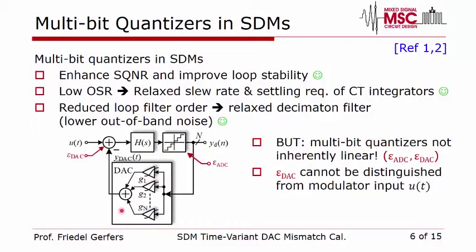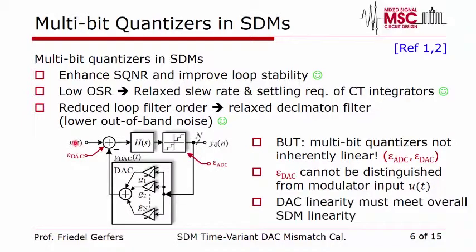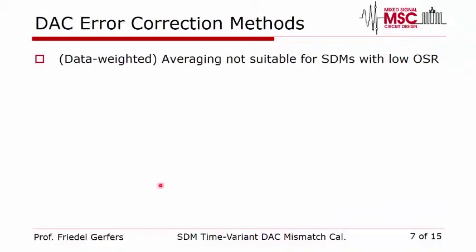However, the DAC error can be modeled as an additional input signal in parallel to our actual ADC input signal. Therefore, we cannot distinguish the error from the actual input signal, and this error must be small enough relative to the full resolution of our Sigma-Delta ADC. For example, if we have a 16-bit Sigma-Delta ADC, the DAC needs to be 16-bit linear or better in order not to limit overall performance.